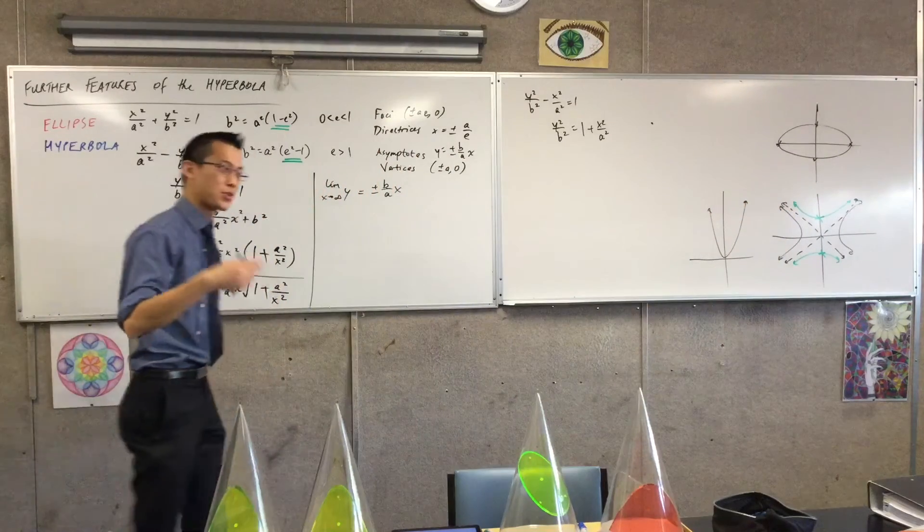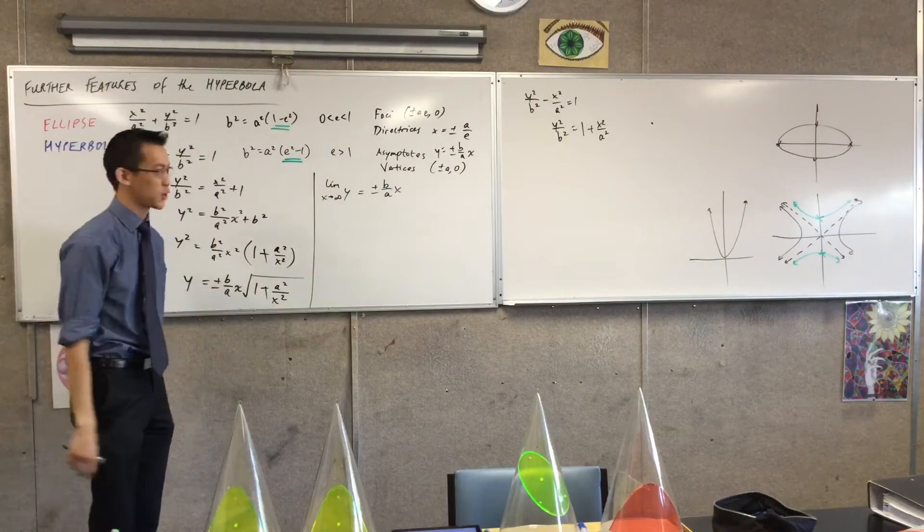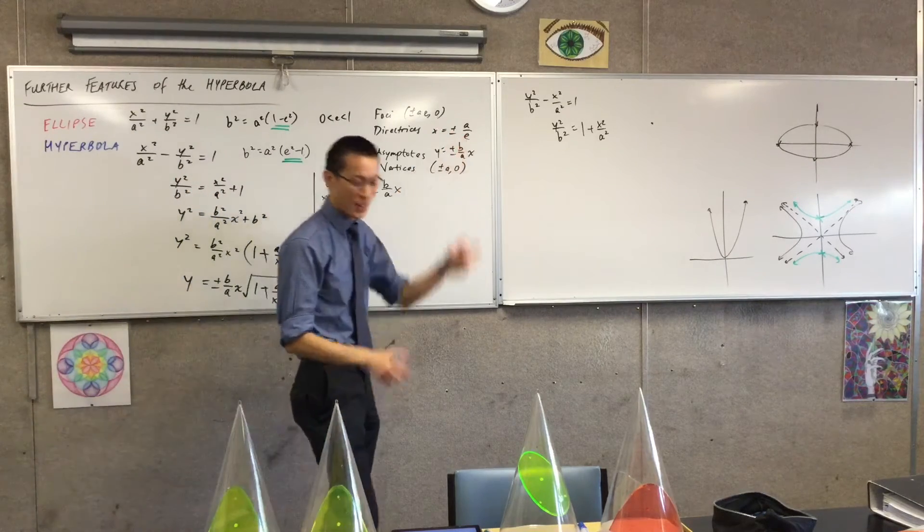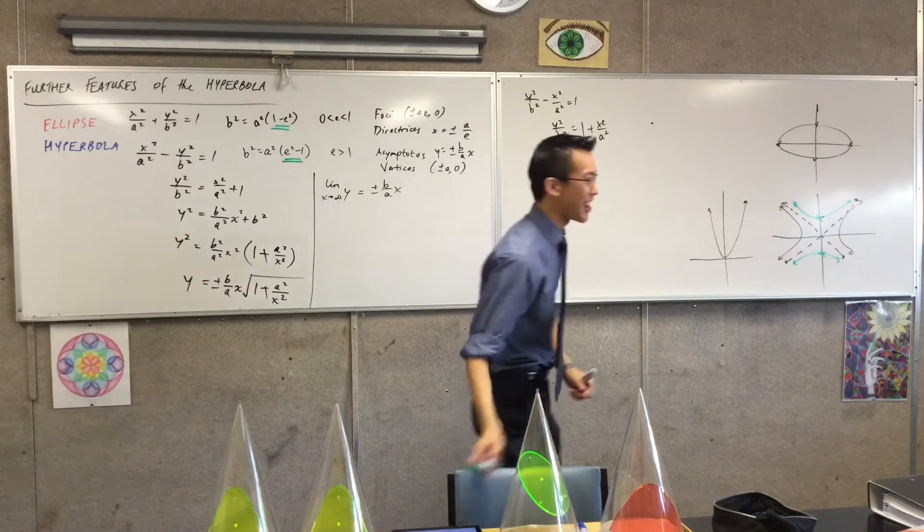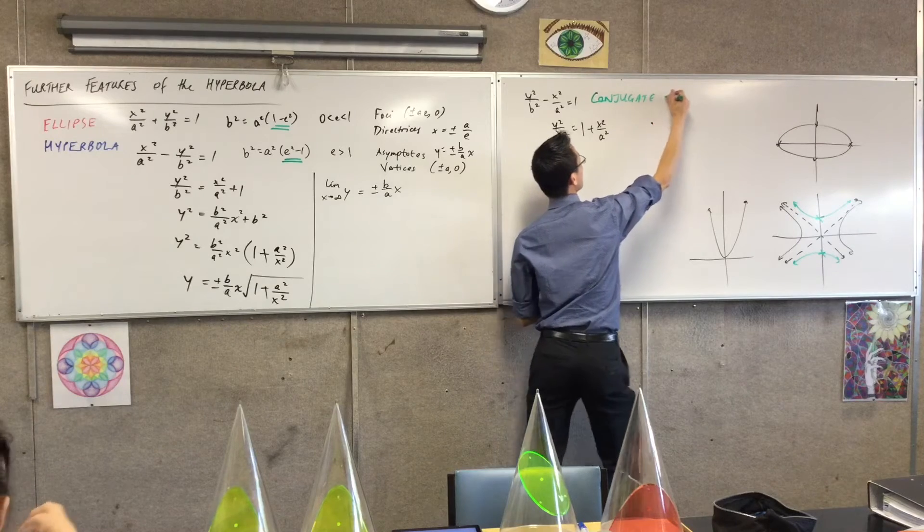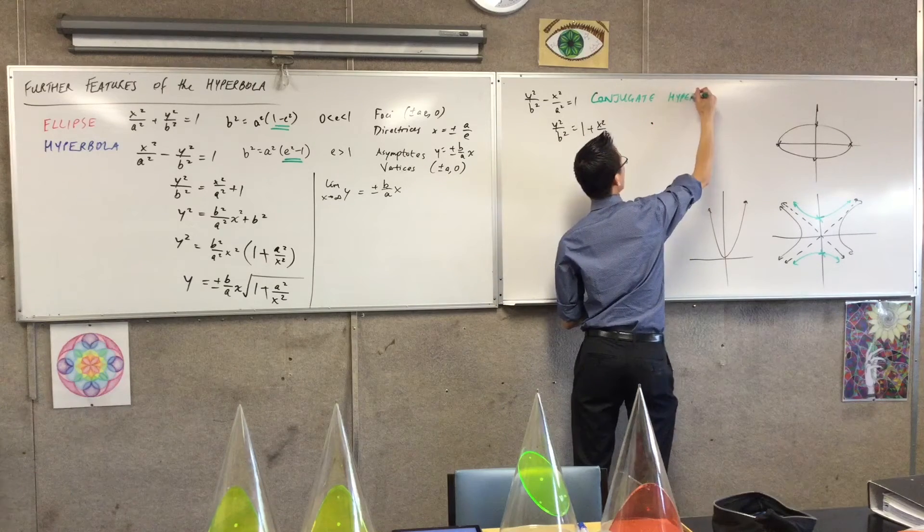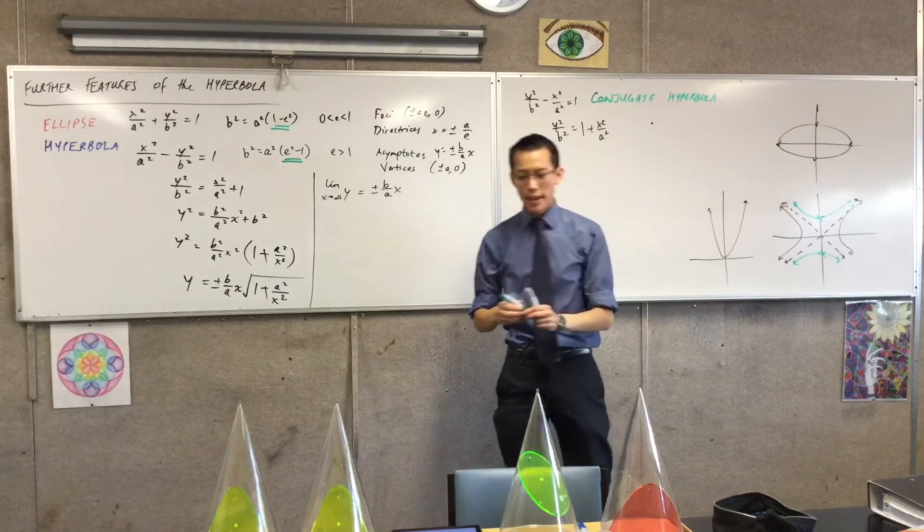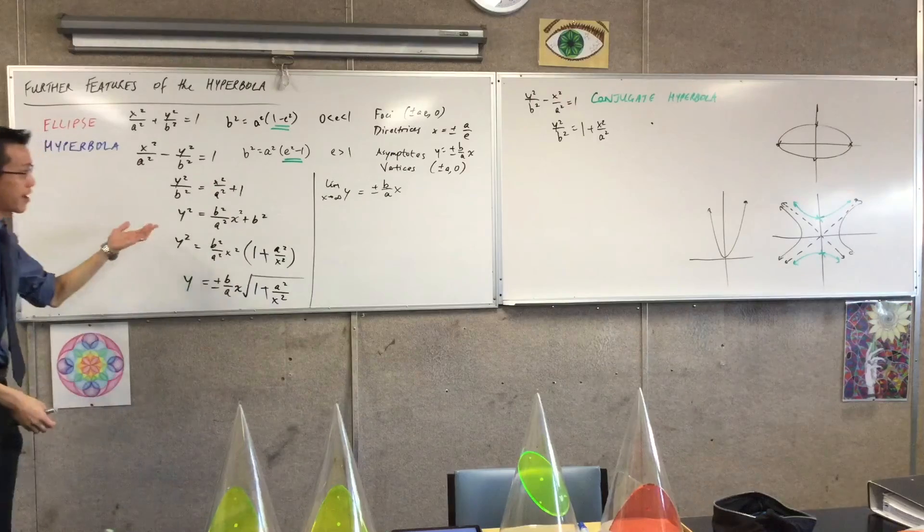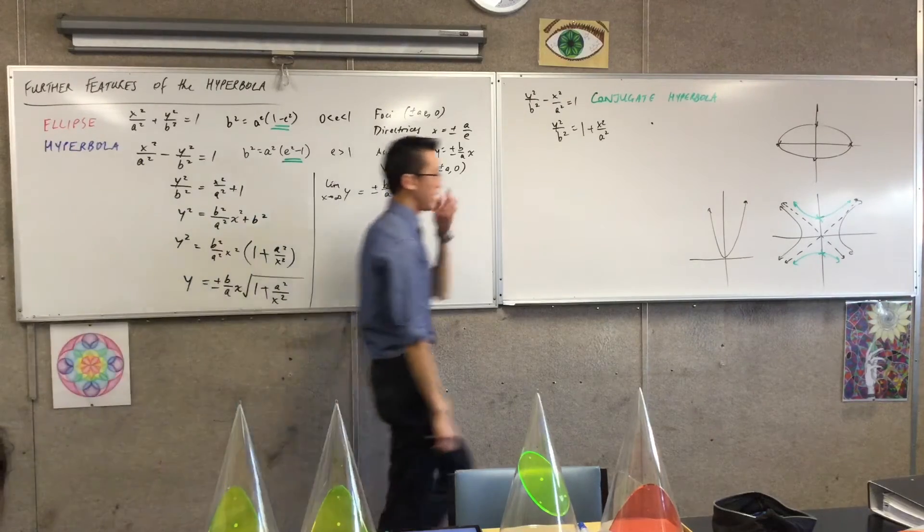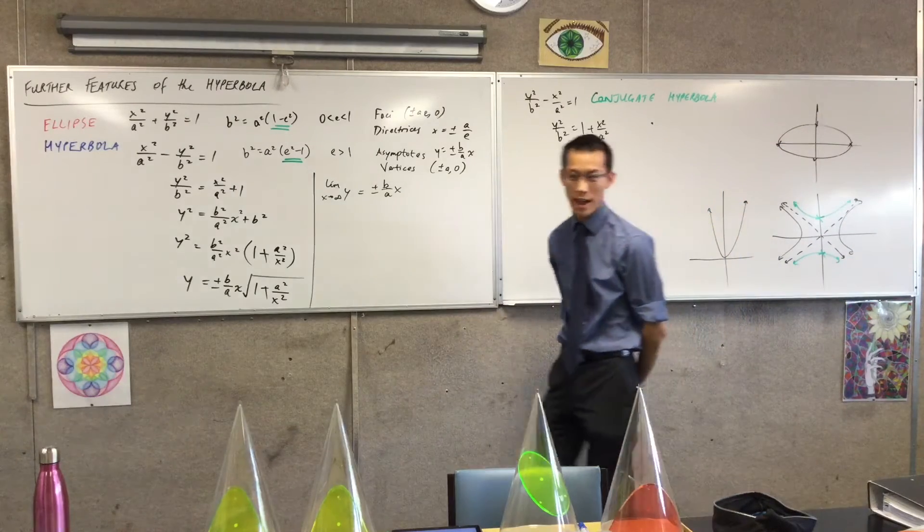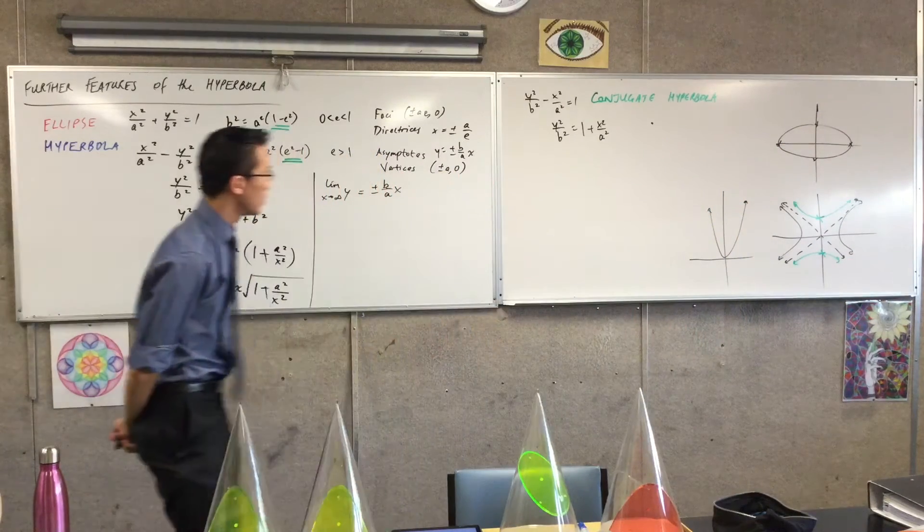So to borrow a word that we introduced last lesson, which kind of just means, well, it's like a hyperbola, but it's the other one. So we call this the conjugate hyperbola. The conjugate hyperbola. It's the hyperbola that shares the same asymptotes as whichever other hyperbola you're here, but instead of being oriented this way, it's going to be oriented the other way. It's going to hit the other coordinate axis.